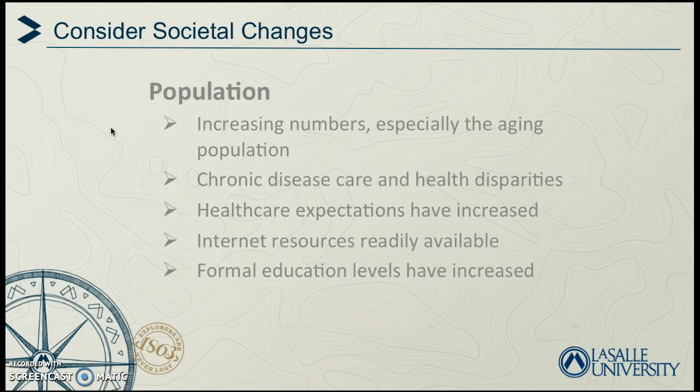With societal changes in population, we know that the aging population is growing. For the elderly, chronic illness versus acute illness is now a major factor. Those older than 65 require a greater proportion of resources both in and out of the hospital, and health promotion behaviors can limit, prevent, or delay disability.